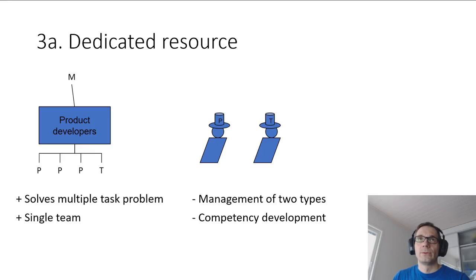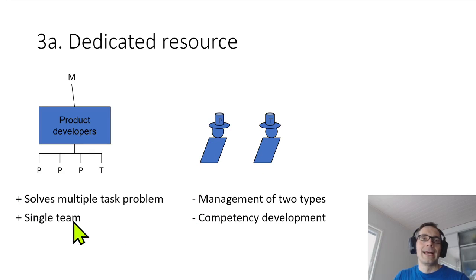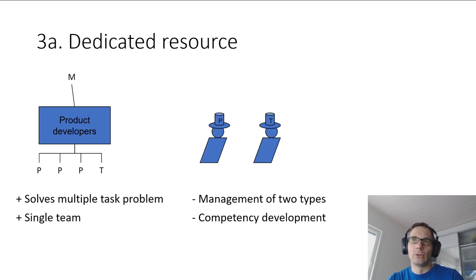The third approach is to have a dedicated resource. We still have a bunch of product developers under some manager, but for example three product developers and one dedicated tester in this organization. This solves the multiple task problem — product developers develop the product and testers are responsible for testing it. It's still possible to keep within single teams, so communication and distribution of knowledge should be quite easy. Some issues are that as a manager you have to manage two types of people — the software developers and the testers — and this might be a problem for competency development, ensuring that testers' competencies are up to par.